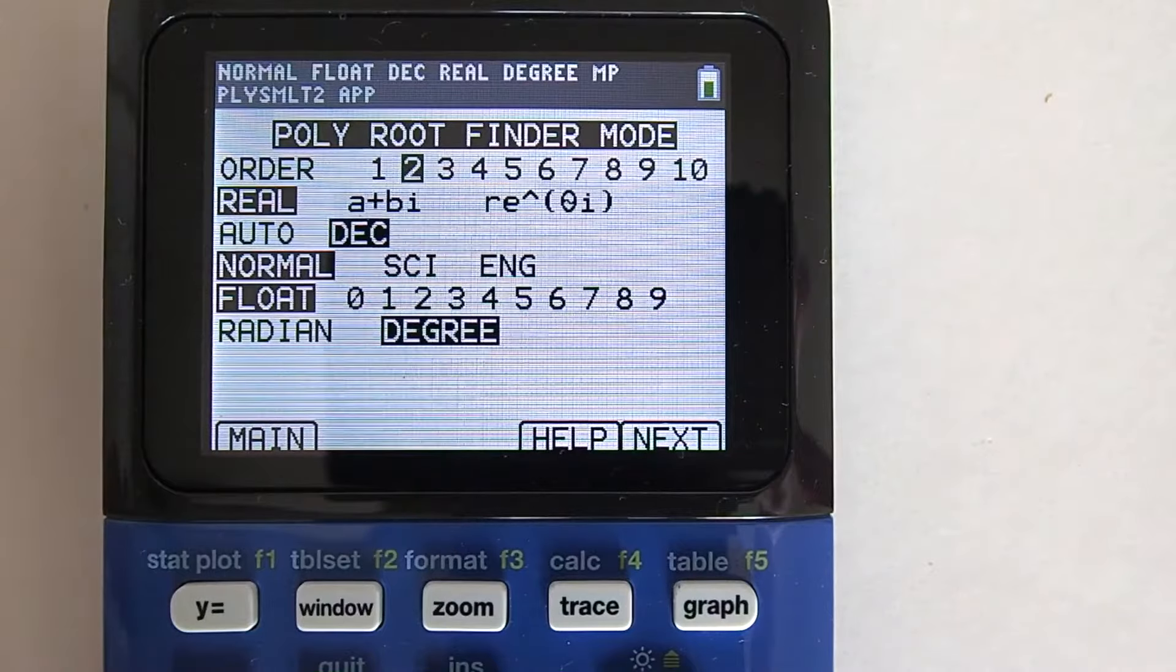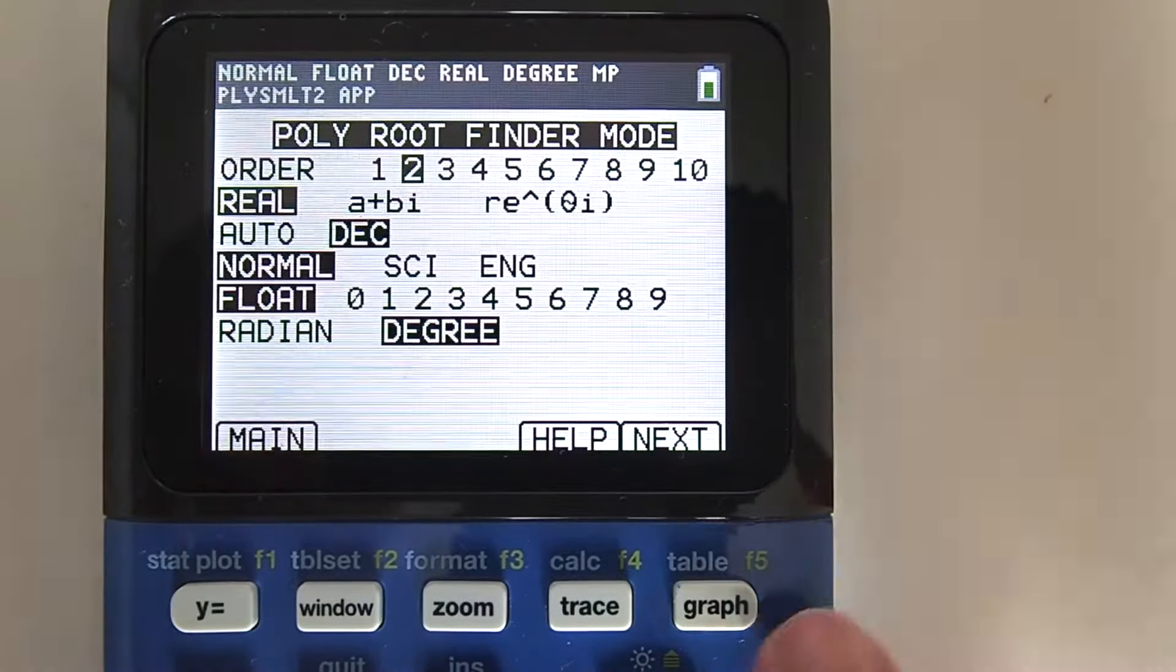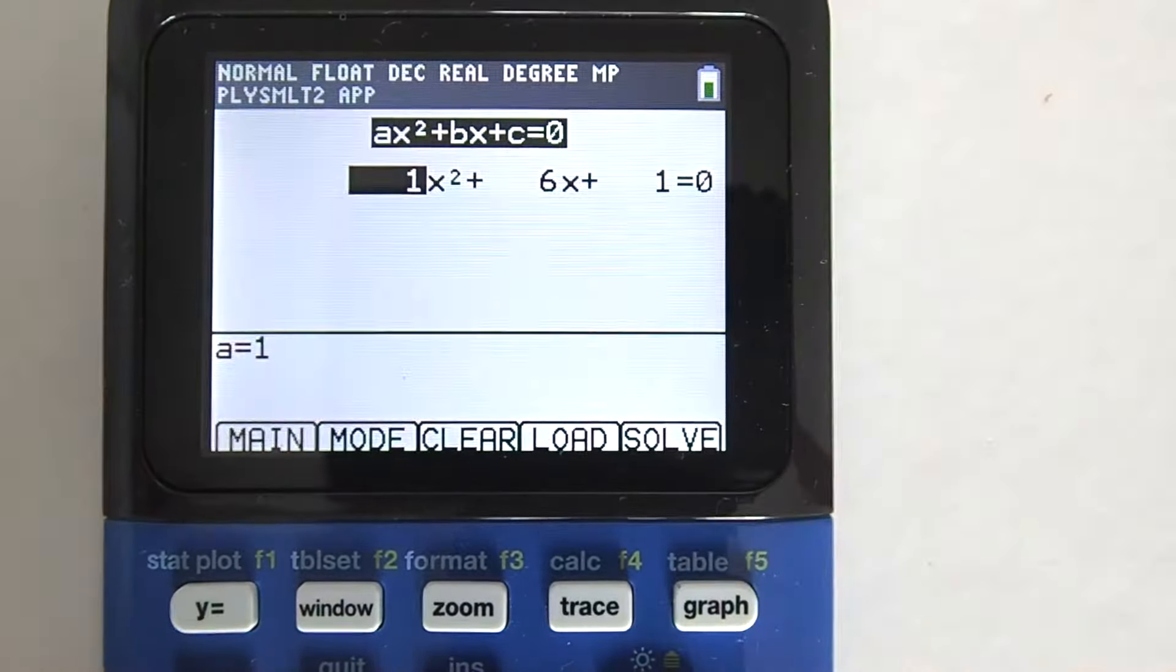Now we are ready to enter our quadratic equation. Go to the next tab here by pressing this graph key. This screen pops up and this is where we enter our equation. The calculator shows a previous equation that I was working with. To clear it out, press the clear tab here by pressing the zoom key.